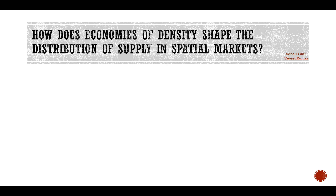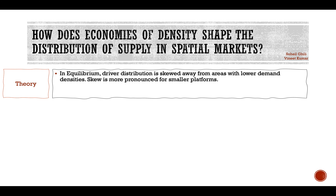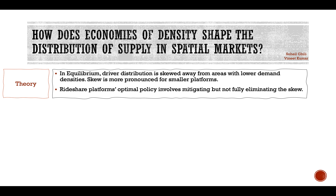We focus on ride-sharing and do three things. On the theory side, we show that in equilibrium, driver distribution is skewed away from areas with lower demand densities and that the skew is more pronounced for smaller platforms. We also show that ride-share platforms' optimal policy involves mitigating but not fully eliminating the skew.